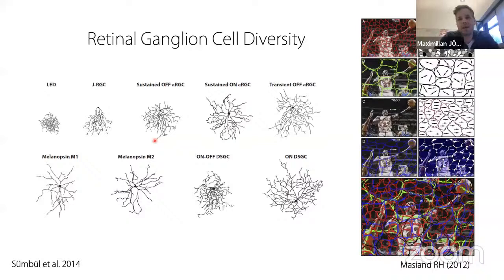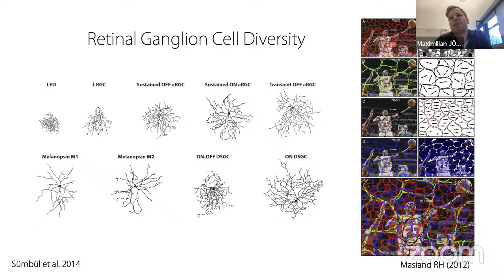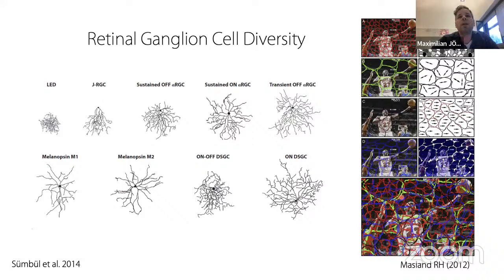In addition, each of those cell types independently tiles the retina — as beautifully shown in a review from Rich Masland — with their dendritic fields organized so they uniformly sample across retinal space. The idea is that overall, these cells will send information to the brain such that each position in space has all possible streams of information available to be read out.